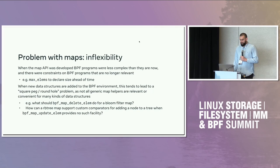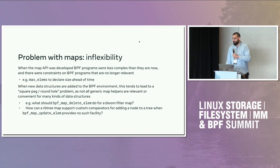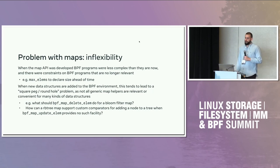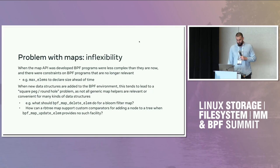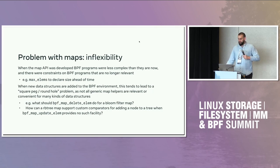The other classification of problems with maps is inflexibility. When the map API was developed, BPF programs weren't as complex as they are now, and constraints were placed on them that are no longer relevant. A great example is max elements for BPF maps, where you need to declare the size of the map ahead of time. That was sort of addressed with pre-allocation flags, but that's how things were done for a while. Adding new data structures to the BPF environment leads to a square peg, round hole problem.